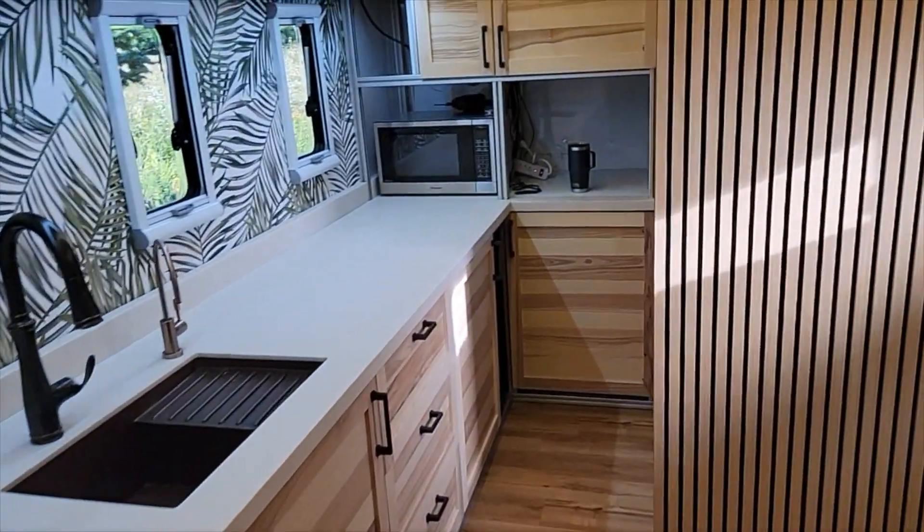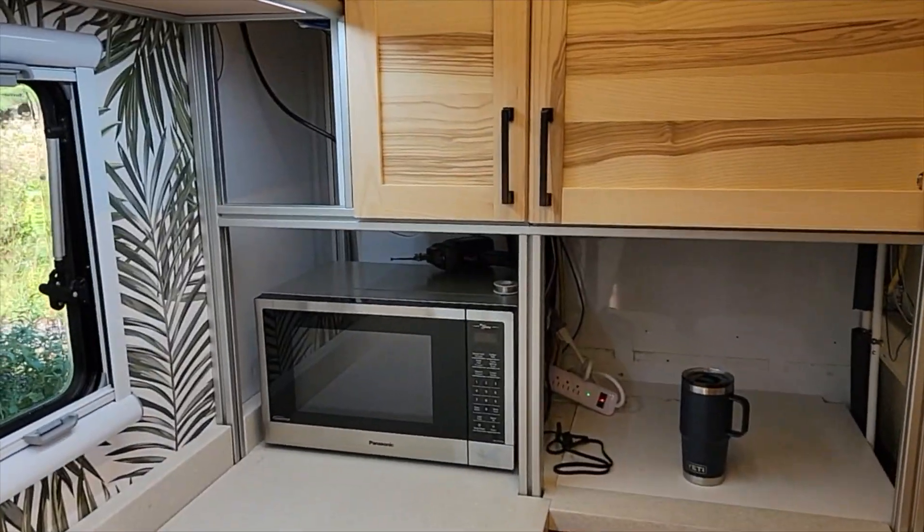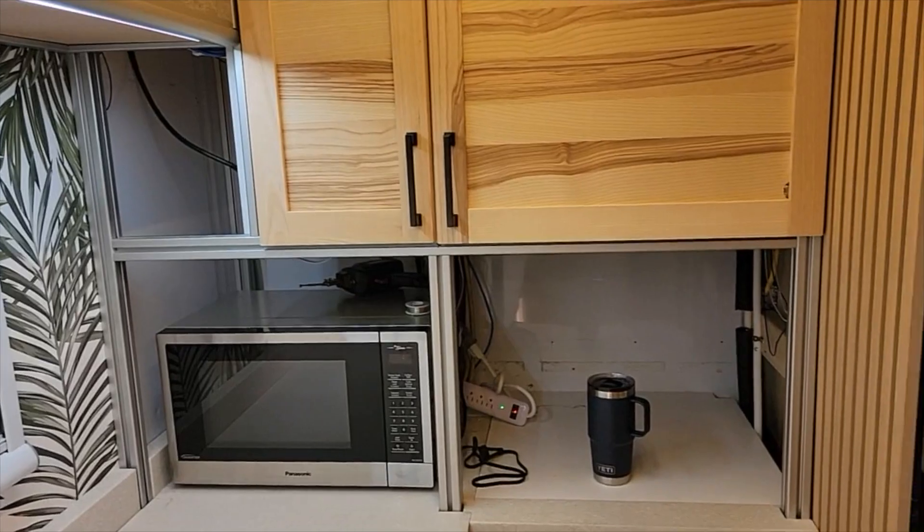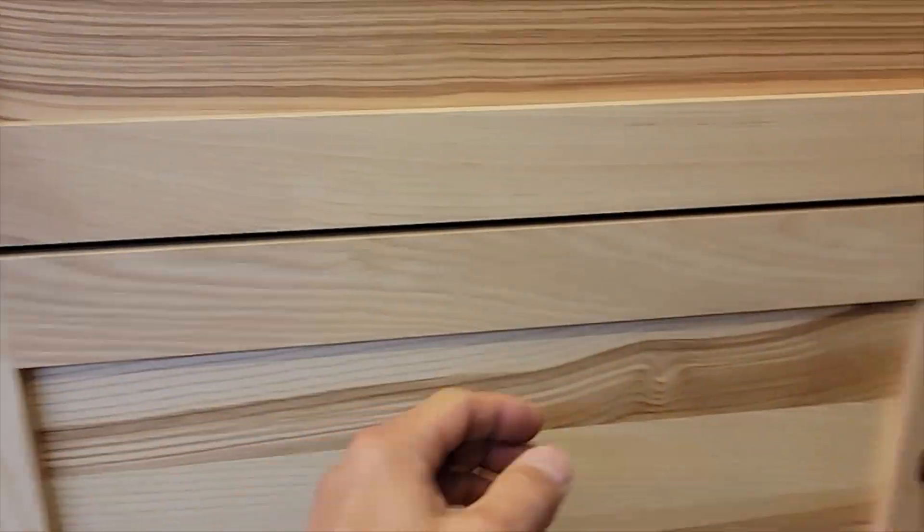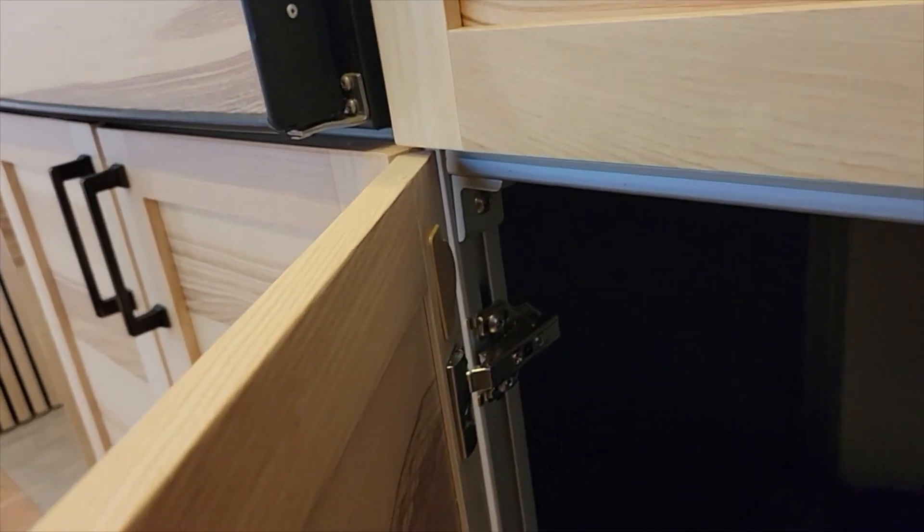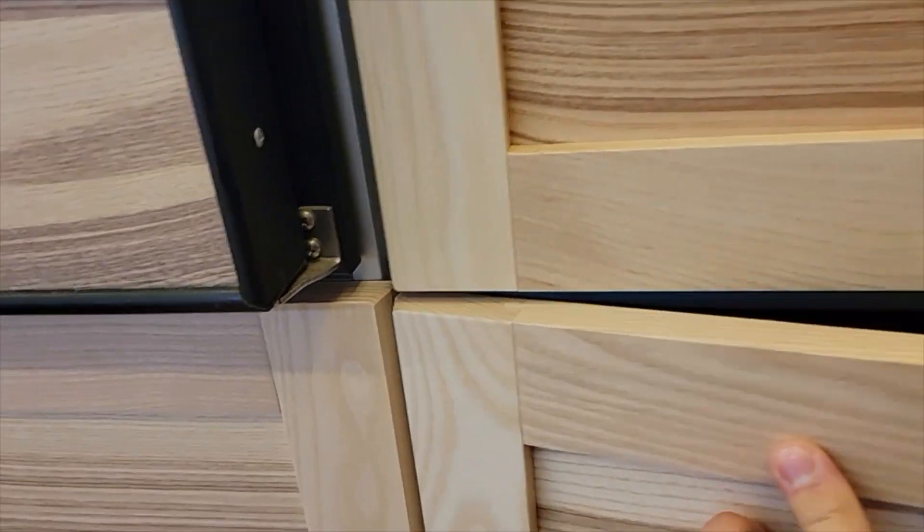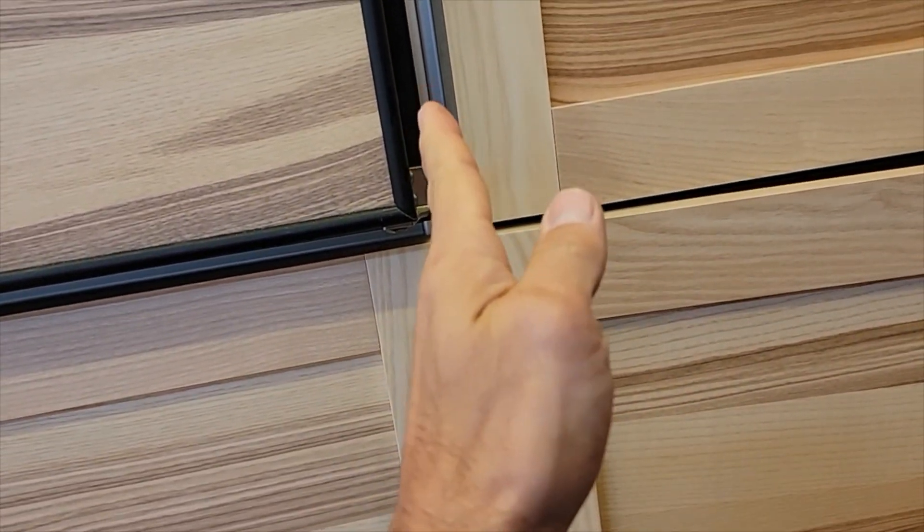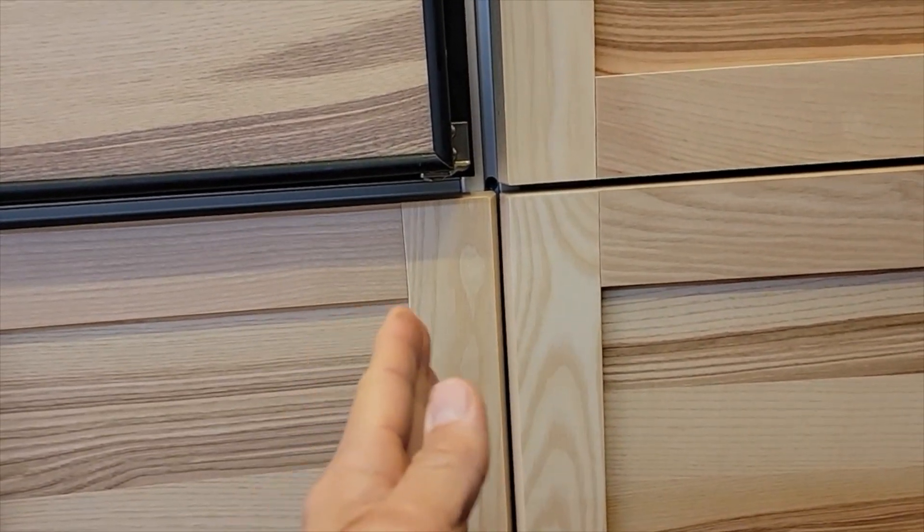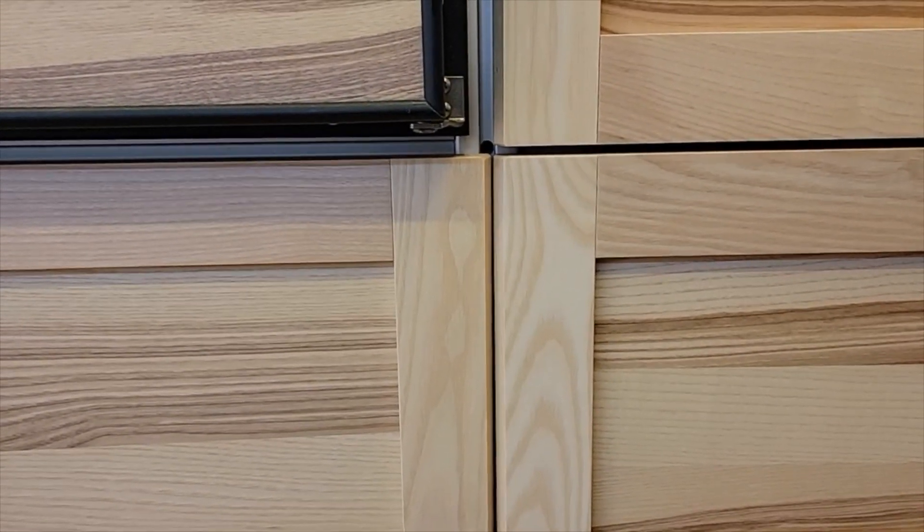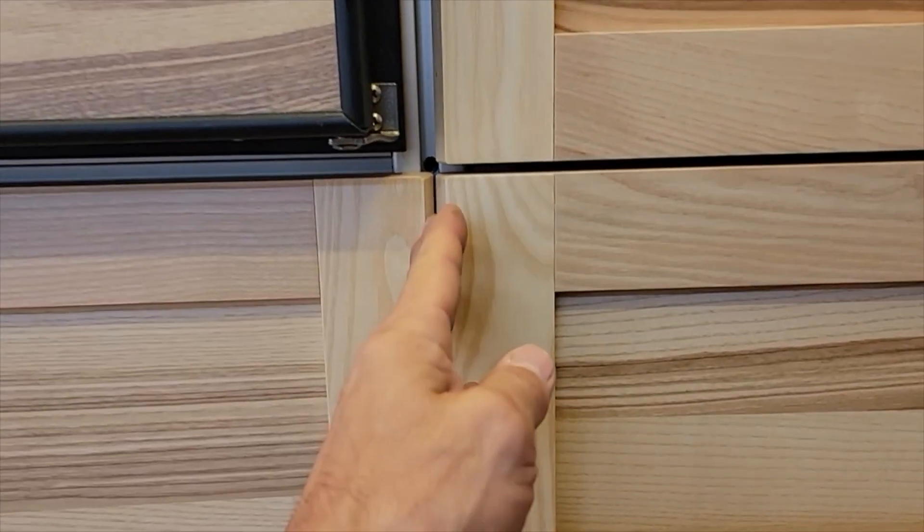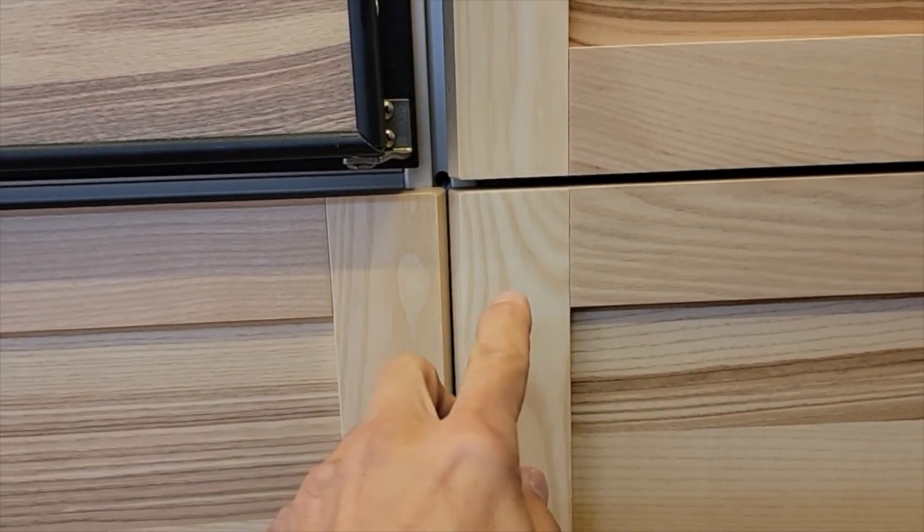The first thing I want to talk about is overlays. Overlay really refers to how much of the door overlaps the frame behind it. In this cabinet, we have 8020 and these two doors are both overlapping one piece of 8020, so the overlay for each door is half the width of 8020. I'm using 15 series 8020, which is 1.5 inches wide, so each door is covering half of 1.5 inches, which is 3 quarters of an inch.